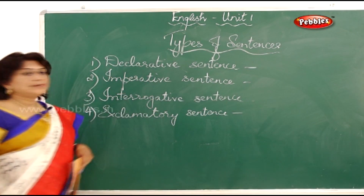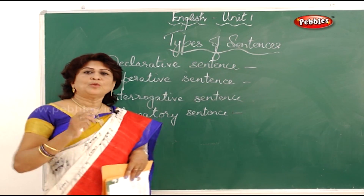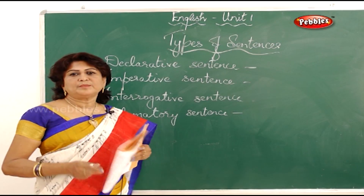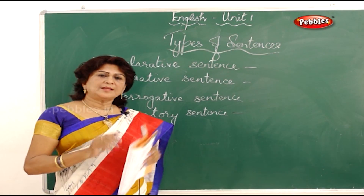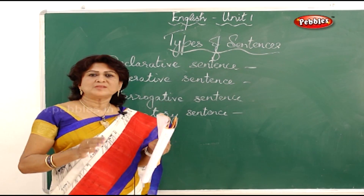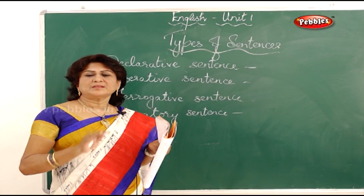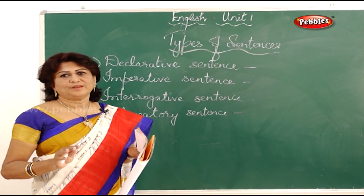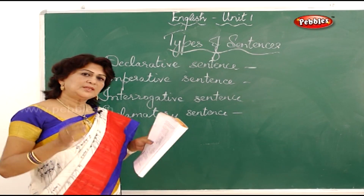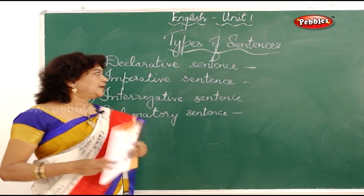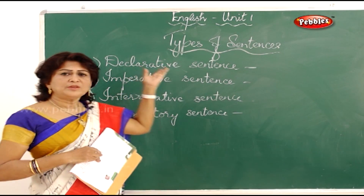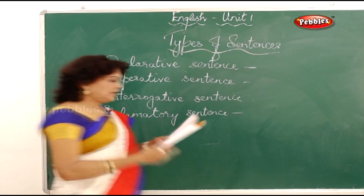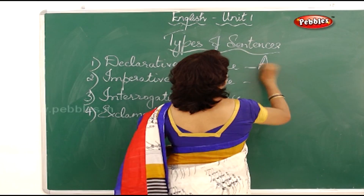A declarative sentence can be either assertive or negative — both are statements. An assertive sentence talks about something, asserting something. A negative sentence like 'I do not like coffee' is also a declarative statement. So a declarative sentence can be both assertive and negative.